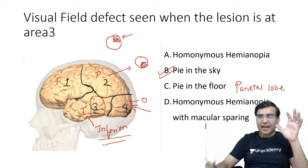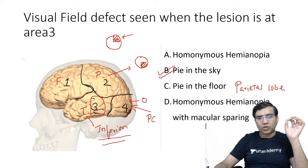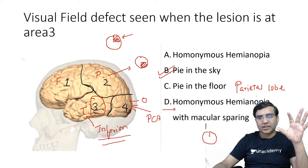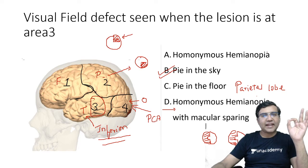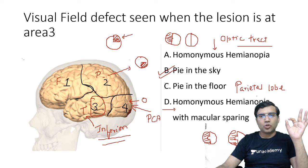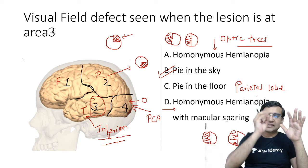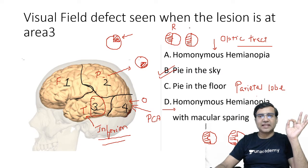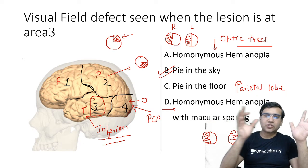When there is a lesion of the posterior ciliary artery in the occipital lobe, it causes homonymous hemianopia with macular sparing. If they simply ask about homonymous hemianopia, the answer would be the optic tract. Homonymous hemianopia means the visual fields of one side — say the right side of the right eye and the right side of the left eye — are both involved.